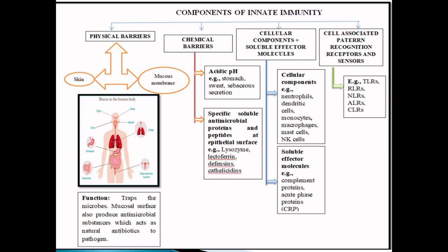This diagram helps you understand the various components of innate immunity. It categorizes the components of innate immunity into four major types, and subtypes are also discussed, which will help you understand the different components along with their sub-components in detail, including examples, their specific mode of action, and the way they work.